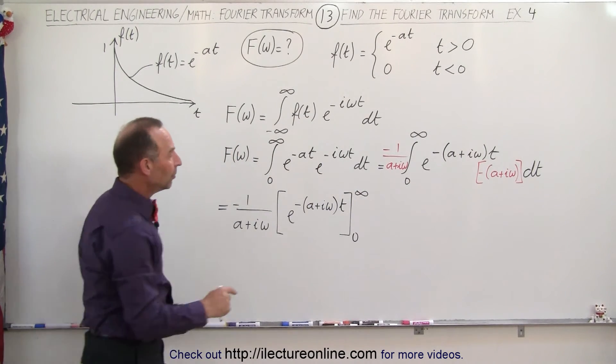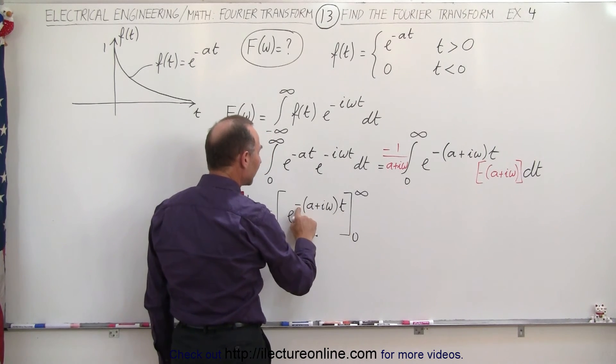We're plugging in the upper limit. We'll let t go to infinity. Since we have the negative sign there, this would be 1 over e to infinity, which is 0.